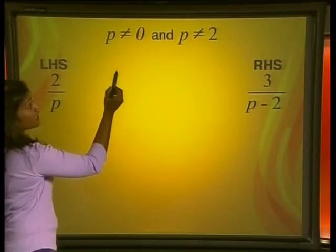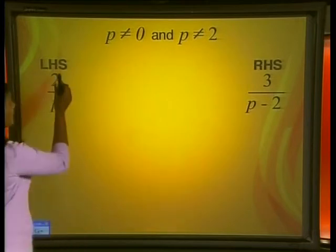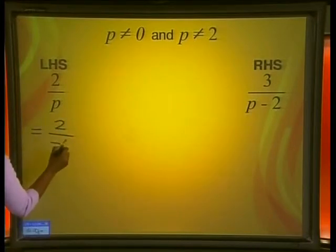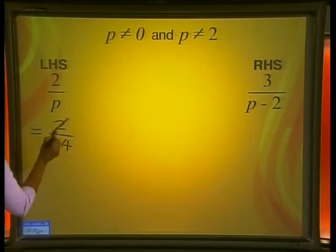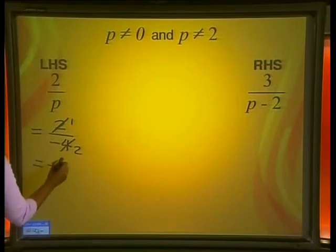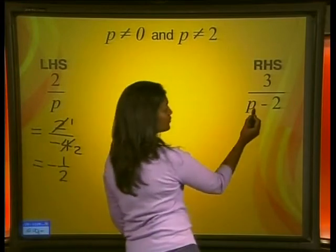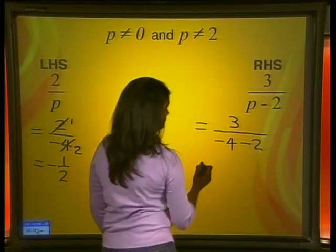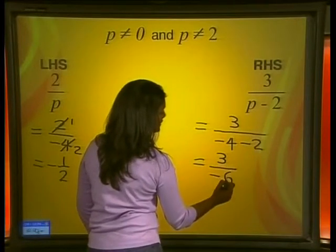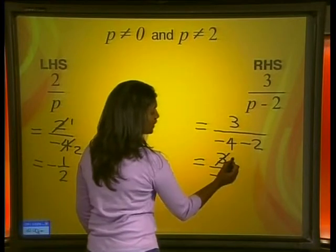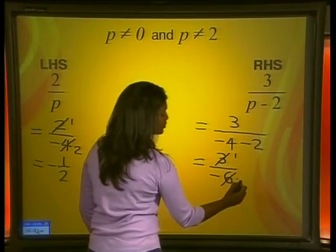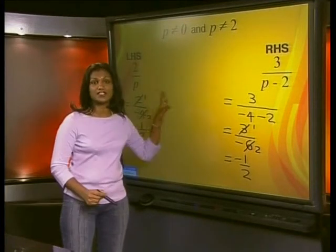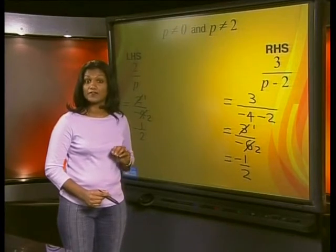We know that P equals negative 4 is allowed because of the restrictions. Substituting P as negative 4 on the left hand side: 2 divided by negative 4 simplifies to negative 1 half. On the right hand side: 3 divided by negative 4 minus 2 equals 3 divided by negative 6, which also simplifies to negative 1 half. Since both sides are equal, P equals negative 4 makes the equation true.